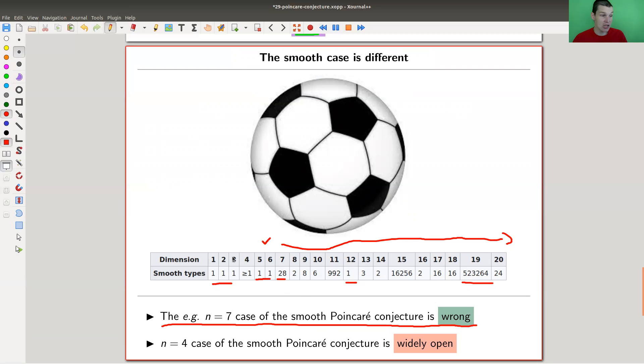Then there's this mysterious dimension - dimension 4. Dimension 4 is widely open. It's wildly open.